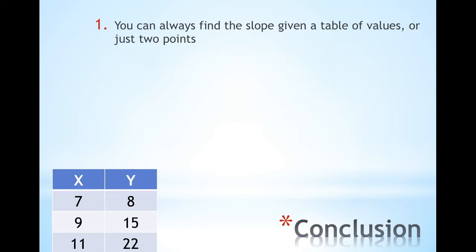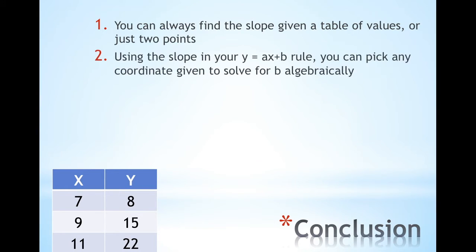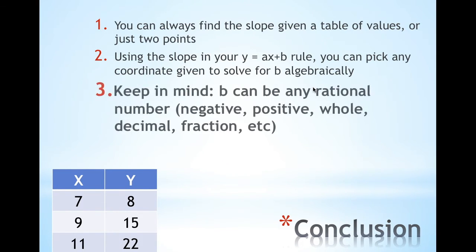In conclusion, you can always find the slope given a table of values or just two points, so you know you need to use your formula. Using the slope in your y = ax + B rule, you can pick any coordinate given to you to solve for B algebraically.